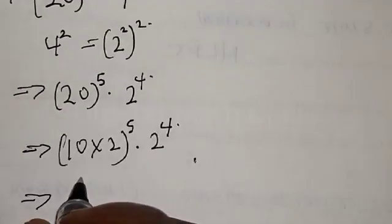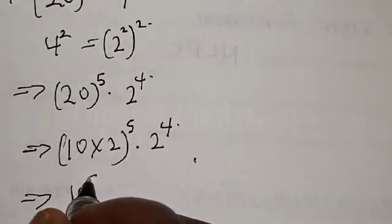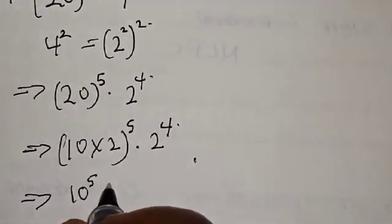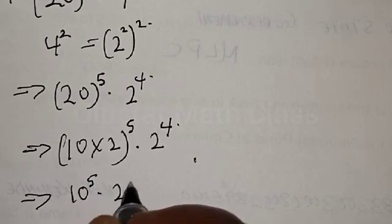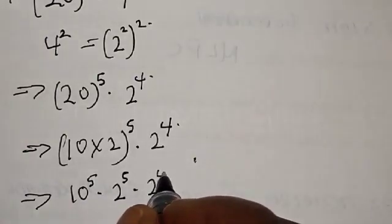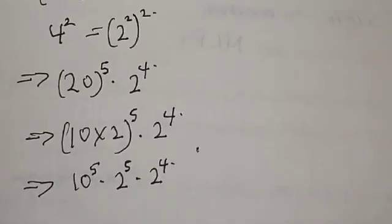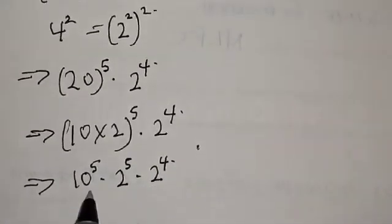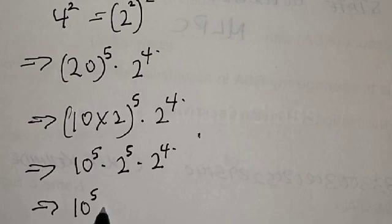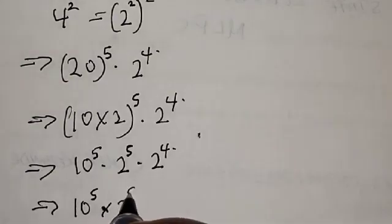From the same rule, this implies that we have 10 raised to power 5 multiplied by 2 raised to power 5, multiplied by 2 raised to power 4. Since we have 2 raised to power 5 and 2 raised to power 4, these combine to give 10 raised to power 5 multiplied by 2 raised to power 9.